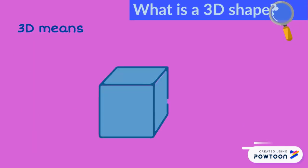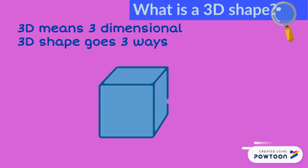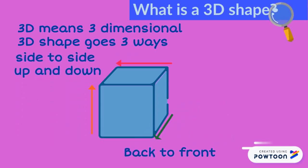Yes, a 3D shape is a shape that has three dimensions. It means the shape goes three ways. It goes side to side, up and down, and back to front.